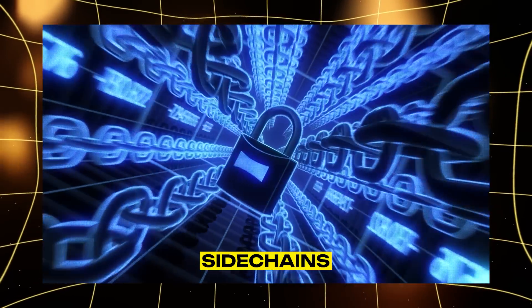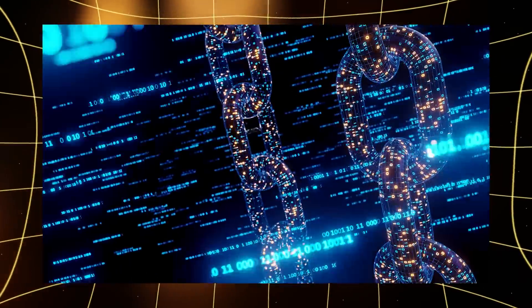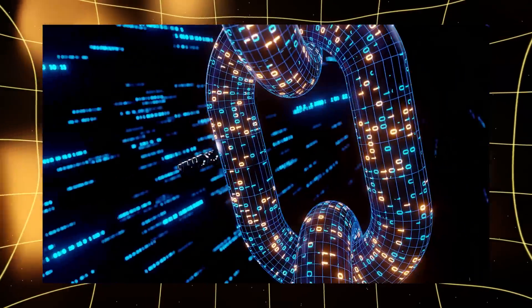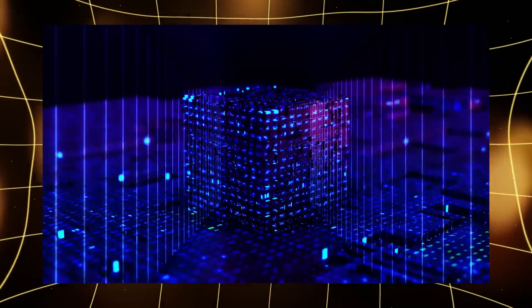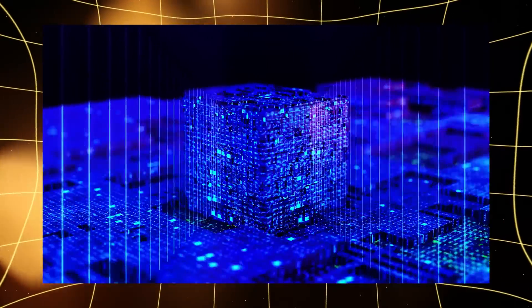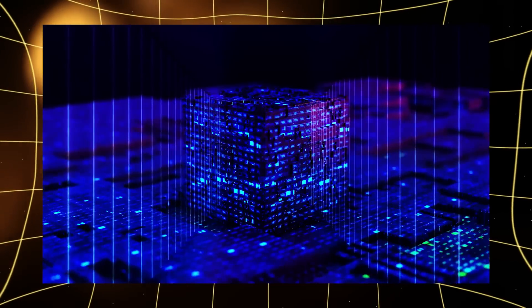Next, we have sidechains. These are separate blockchains linked to Ethereum, but playing by their own rules. They process transactions faster and cheaper while maintaining a lifeline to the main network. It's like having a dedicated express lane connected to the main highway.